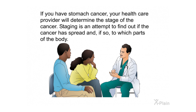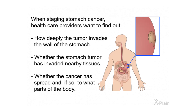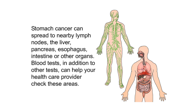If you have stomach cancer, your health care provider will determine its stage — an attempt to find out if the cancer has spread and to which parts of the body. Stages are described using numbers one through four, with a lower number indicating an earlier stage. Health care providers assess how deeply the tumor invades the stomach wall, whether it has invaded nearby tissues, and whether it has spread. Stomach cancer can spread to nearby lymph nodes, the liver, pancreas, esophagus, intestine, or other organs.